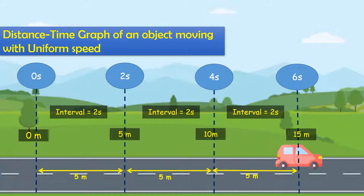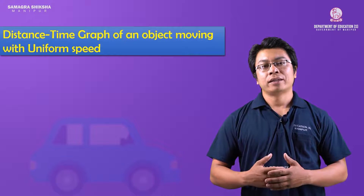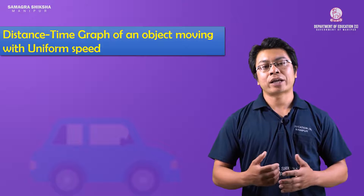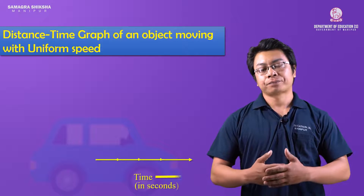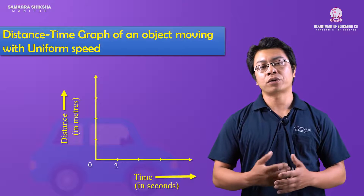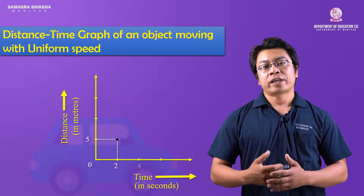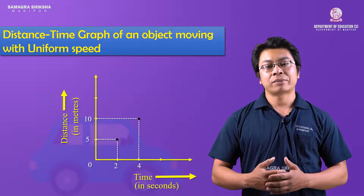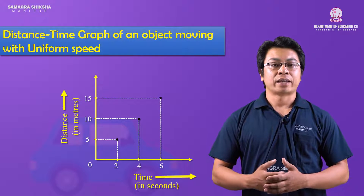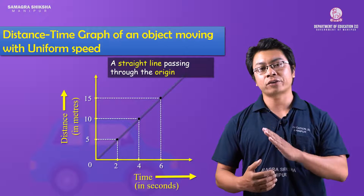Over equal intervals of time, the body covers equal distance, meaning the body has uniform speed. For a body having uniform speed, the distance-time graph shows a straight line along the x-axis for time and y-axis for distance. From origin, at time 0 seconds distance is 0 meters, at 2 seconds distance is 5 meters, at 4 seconds distance is 10 meters, at 6 seconds distance is 15 meters — giving a straight line inclined to the time axis.